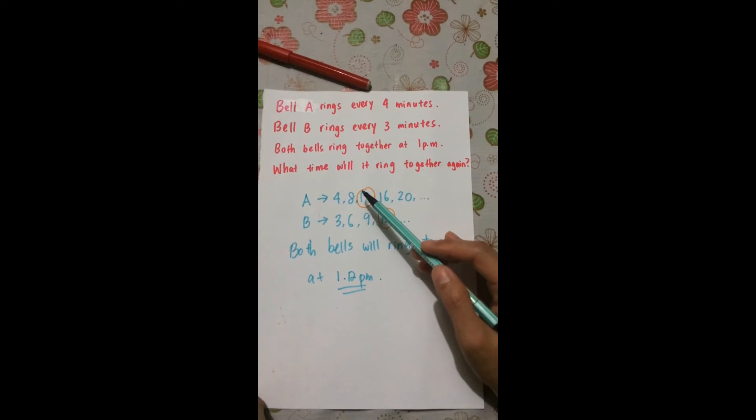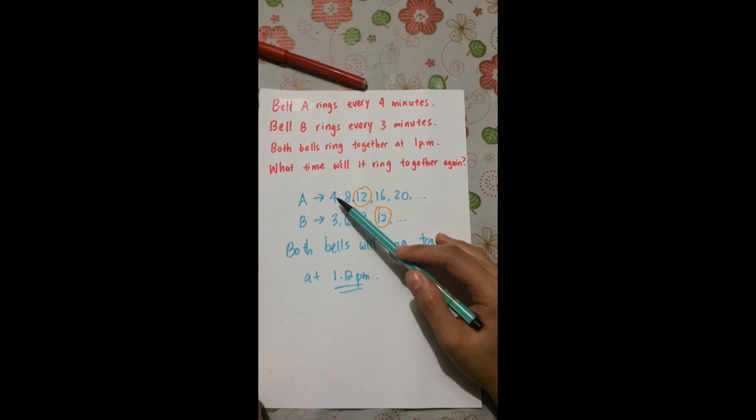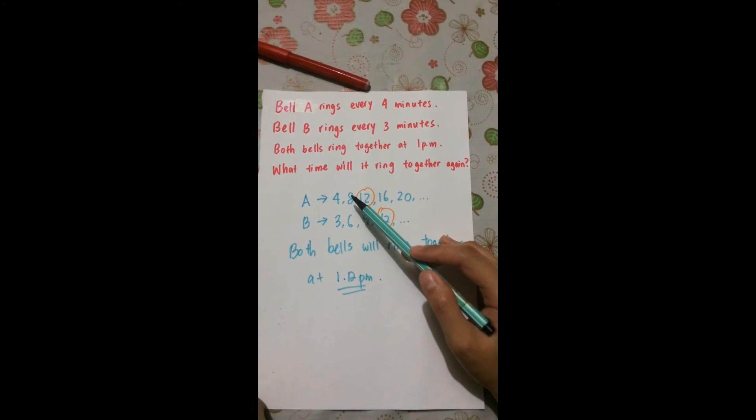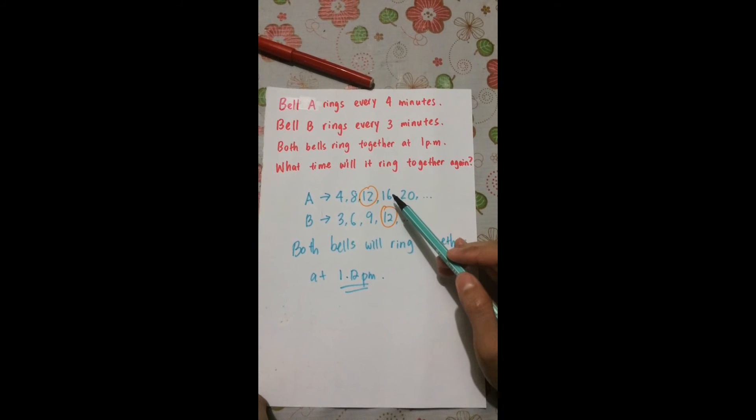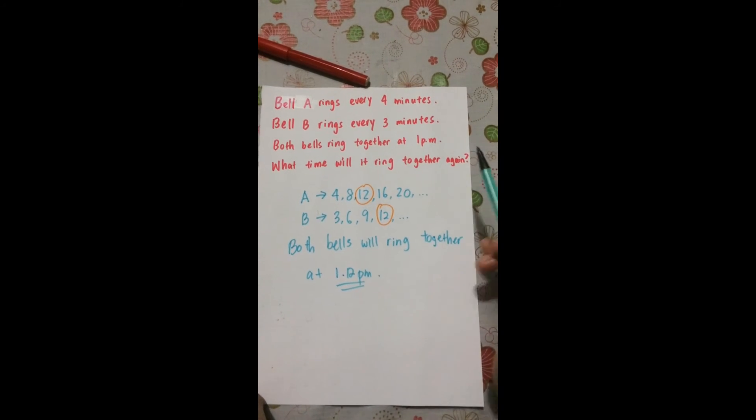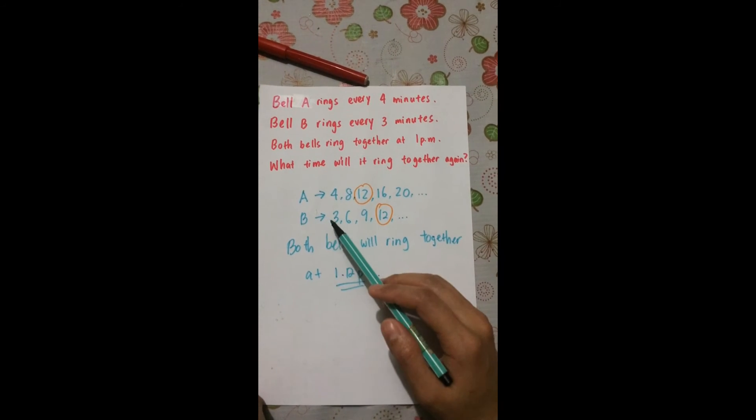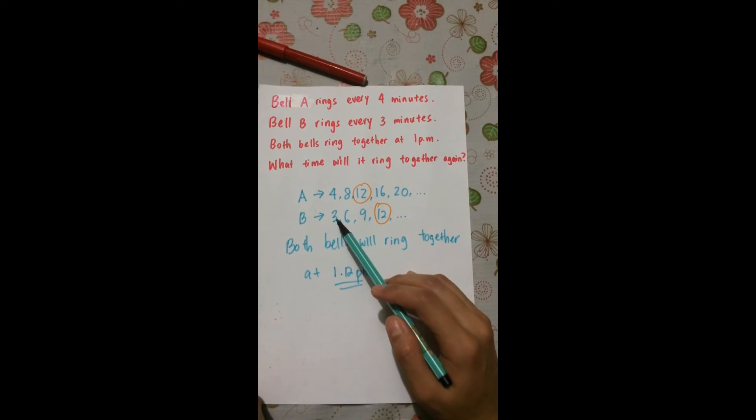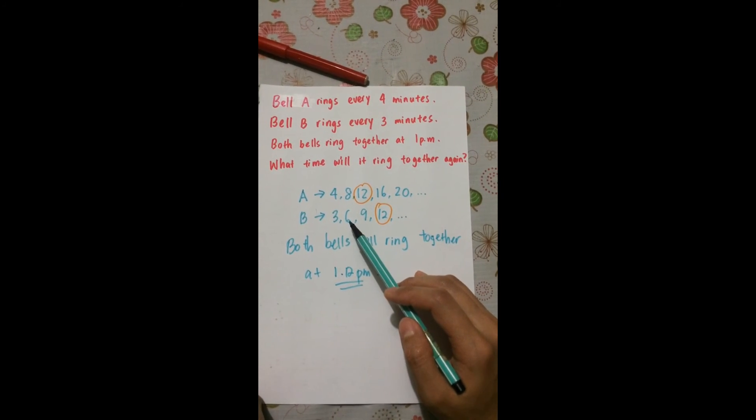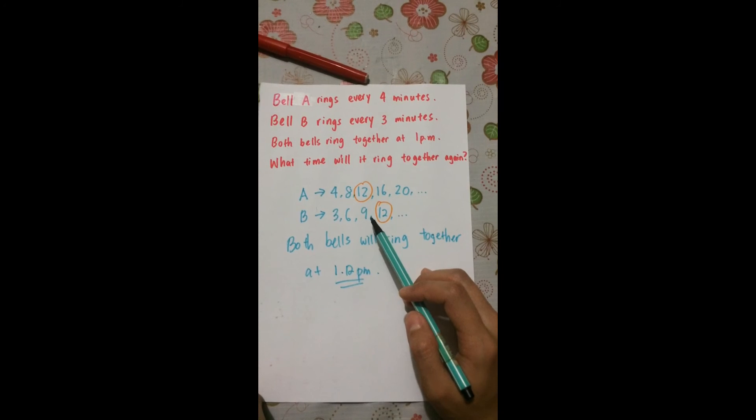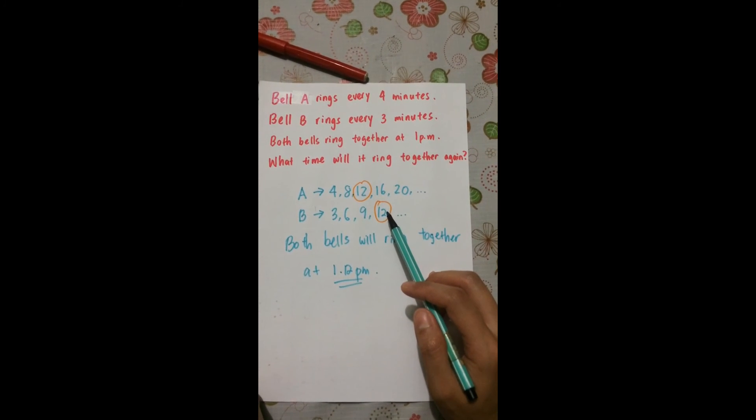bell A will ring at the 4th minute, at the 8th minute, at the 12th minute, at the 16th minute, and so on. Bell B will ring at the 3rd minute, at the 6th minute, at the 9th minute, at the 12th minute, and so on.